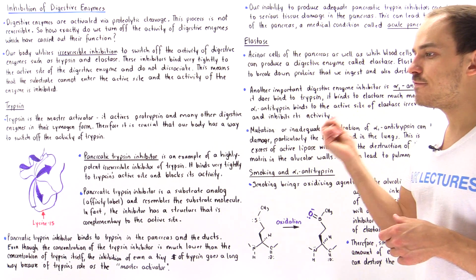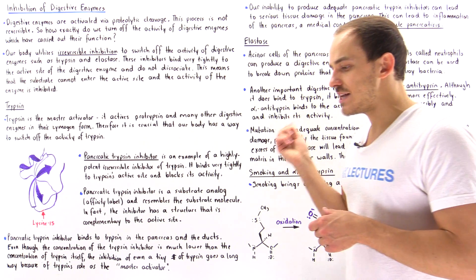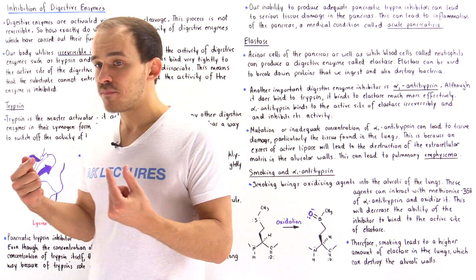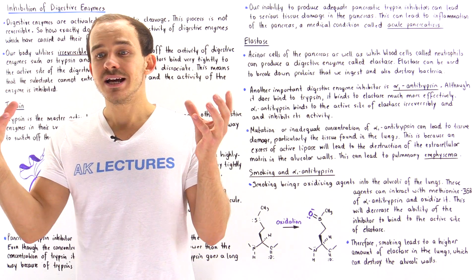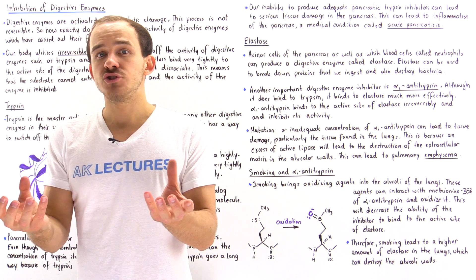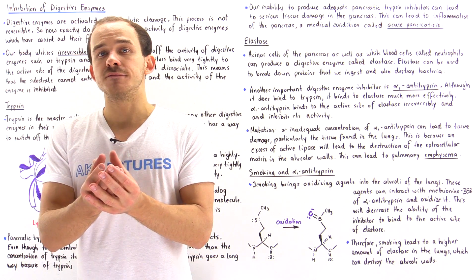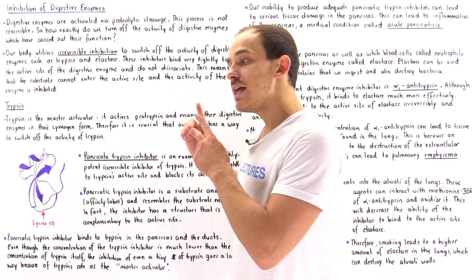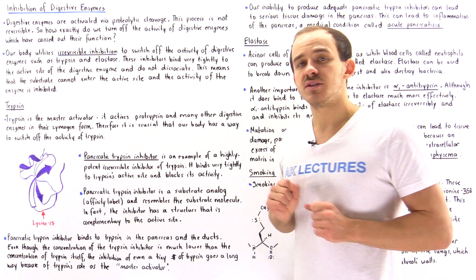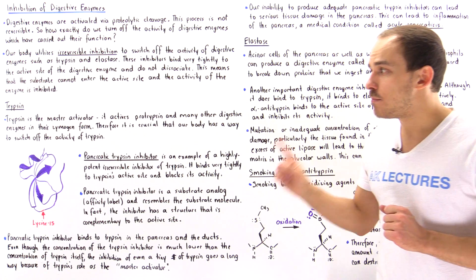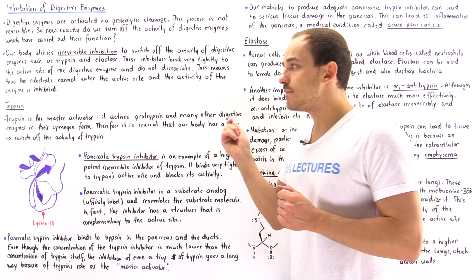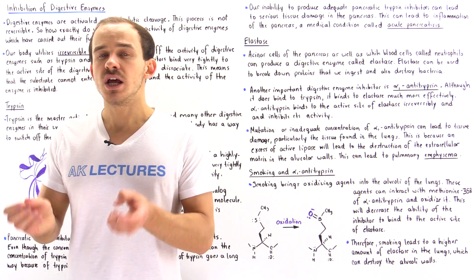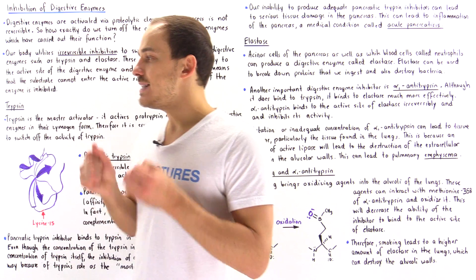Trypsin is responsible for essentially coordinating the activation of all different types of digestive enzymes at the same time. That's precisely why it's very important that our body has an effective way of switching off trypsin's activity when needed.